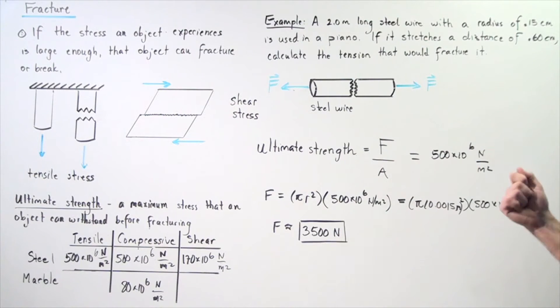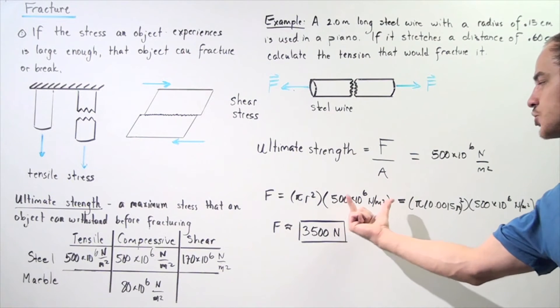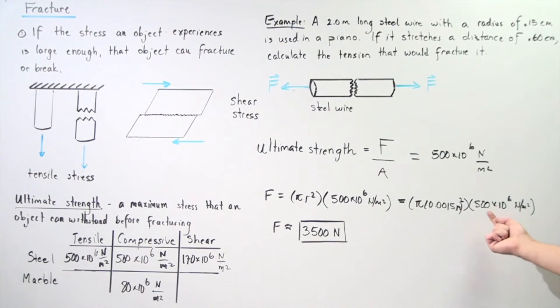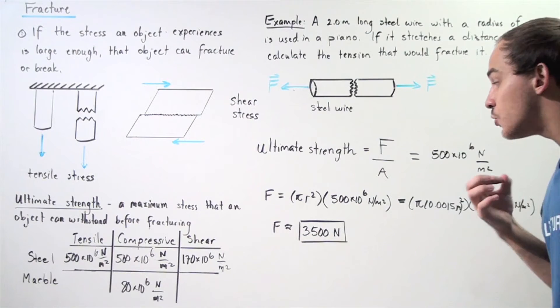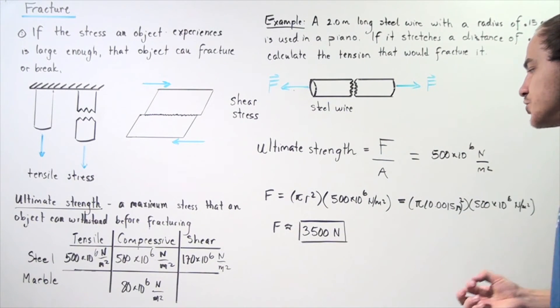So now we rearrange our equation and we solve for the force. The force is equal to the cross-sectional area of the wire, which is assumed to be circular. So that's pi r squared, where r is simply our radius in meters, which is 0.15 divided by 100. So we have pi multiplied by 0.0015 meters squared and multiply that quantity by our ultimate strength of our tensile stress. So 500 times 10 to the 6 newtons per meter squared and we get an approximate tensile force, an approximate tension of 3,500 newtons.